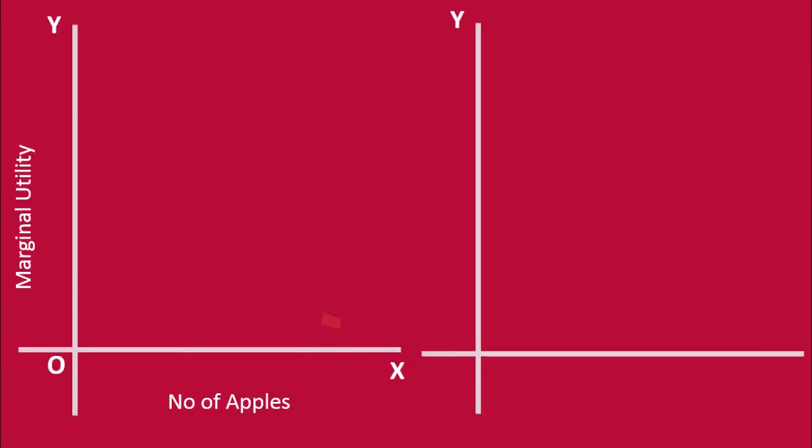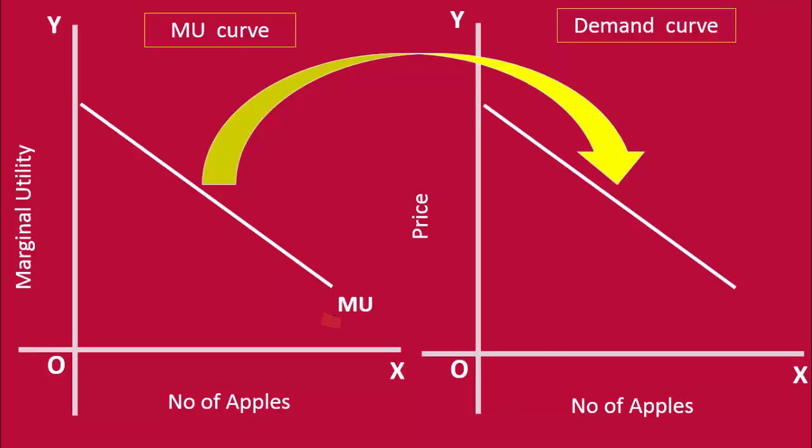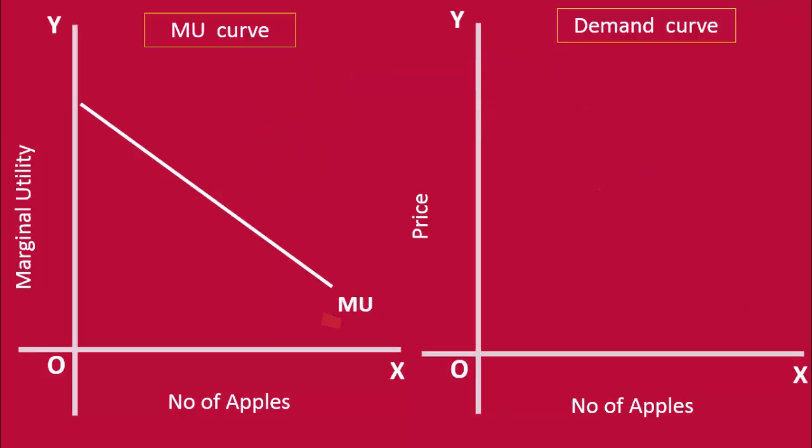Look at these graphs. The MU curve on the left side graph is the marginal utility curve. The right side graph is meant for fixing the demand curve. We are going to derive the demand curve from the marginal utility curve.